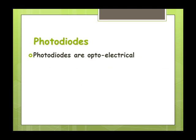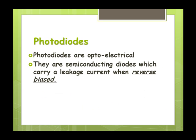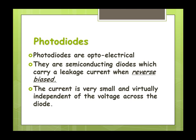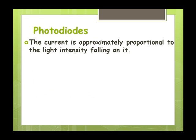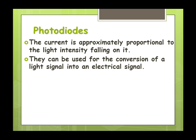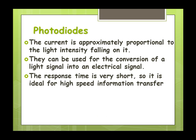This is also an optoelectrical device. Now these work in reverse bias. Basically, as the light falls on it, it allows what we call a leakage current. It helps emit electrons as the light falls on it. Current is very small and it doesn't depend on the voltage that's across the diode. So that means it's solely dependent on the amount of light that's going to fall on it. We can use this to convert light back into an electrical signal. It has a really short response time. So it's ideal, it's perfect for high-speed information transfer.